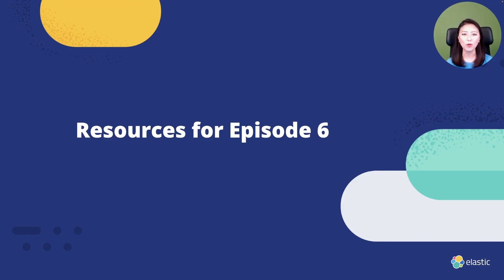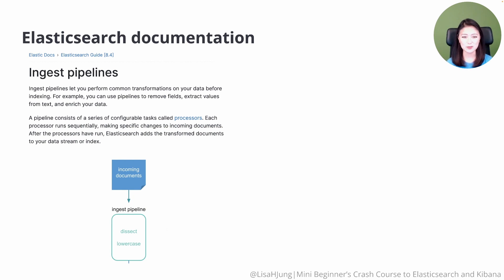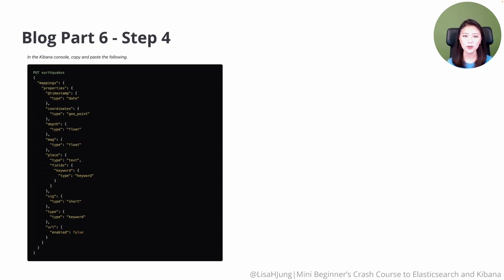Let's talk about the relevant resources for this episode. All the links to these resources are included in the description box. We'll talk a lot about ingest pipelines, so if you want more info, check out the Elasticsearch documentation. The mapping we'll use is included in the blog part six, step four.